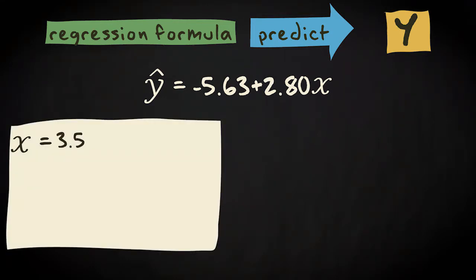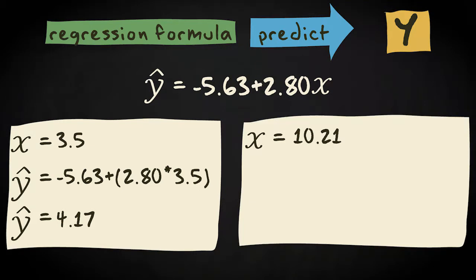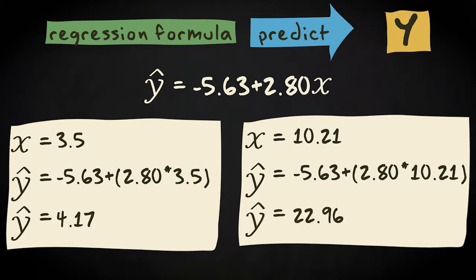What if x equals 3.5? We get minus 5.63 plus 2.80 multiplied with 3.5. That makes 4.17. So y hat equals 4.17 here. And what if x equals 10.21? Then you get minus 5.63 plus 2.80 times 10.21. That makes y hat equals 22.96.